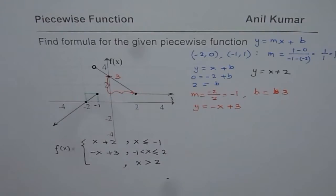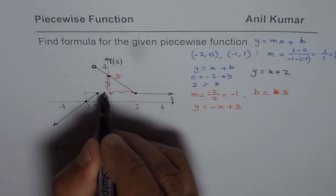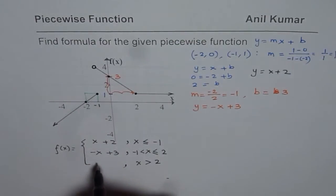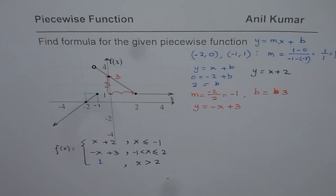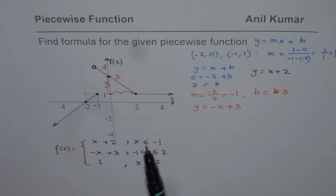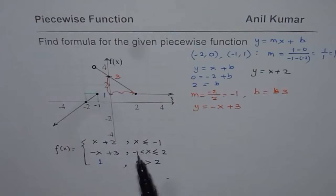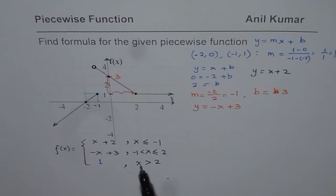The third part is a horizontal line with a constant value of one, so it is written as the constant function one. These are the three pieces, giving us the complete piecewise function formula: x plus two for x less than or equal to minus one; minus x plus three for minus one less than x less than or equal to two; and the constant one for x greater than two.